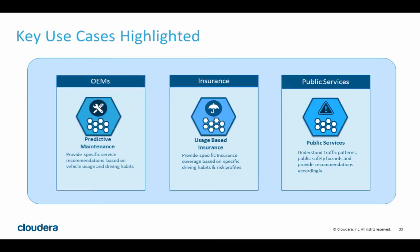This is a general purpose architecture, but you'll see these use cases more than anything else. For a vehicle manufacturer, they might look at overall counts of how many times the brakes have been applied, or use the aggression scores to make recommendations to drivers about when they need to maintain their vehicle. Someone who brakes aggressively is going to need to replace their brakes more often. A manufacturer wants to make that recommendation — maybe send them a coupon — to provide that service and also generate revenue.